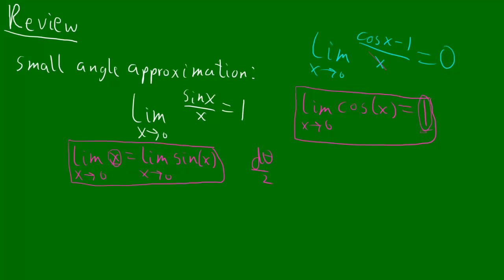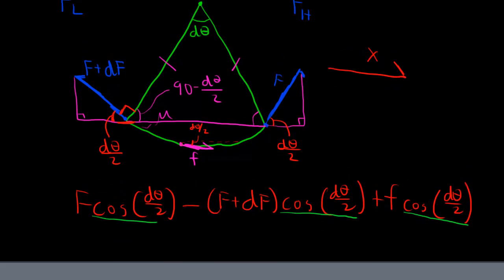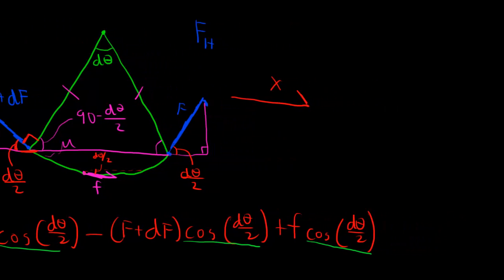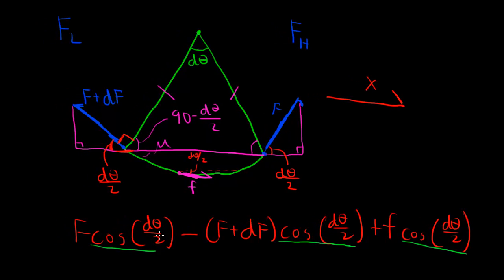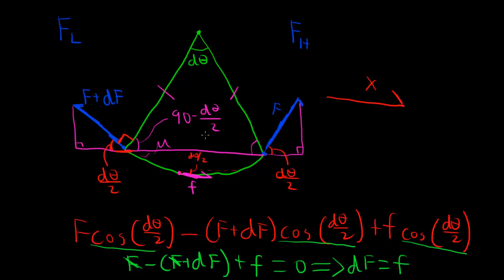So moving back to the actual problem, we can use that knowledge here. All of these cosines are now 1, so we have f minus f plus df plus little f. And since we don't want the rope to be sliding or moving in this direction, the sum of these forces has to be 0. Then we can clean up and cancel terms. That means our df equals f, the friction force. That makes sense, because if we don't want this to be sliding, the difference in these two forces has to be exactly equal to this friction force so that nothing moves.